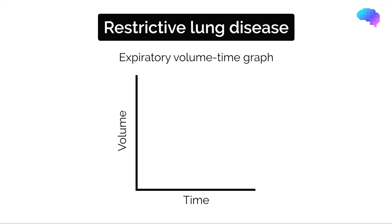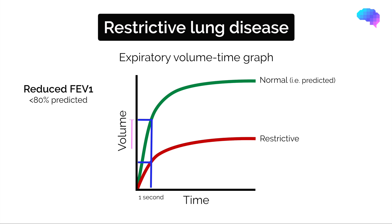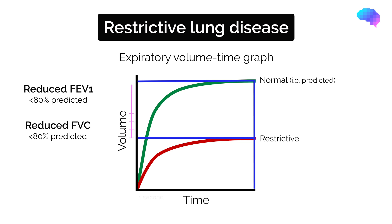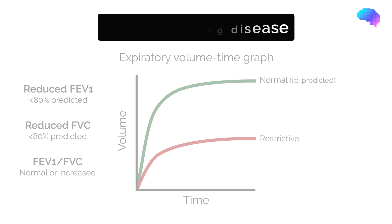Now let's look at the restrictive respiratory pattern. Here, lung compliance is reduced, resulting in stiff lungs. With restrictive lung disease, the spirometry pattern looks different. Again, the FEV1 is reduced to less than 80% of the predicted normal. The FVC is also reduced to less than 80% of the predicted normal value. Overall, this results in a normal or even increased FEV1 to FVC ratio.